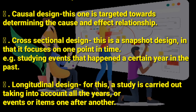Causal design — this is a design targeted towards determining the cause and effect relationship. What was the cause of a thing and what was the effect of it? That is the causal design: determining the cause and effect relationship.